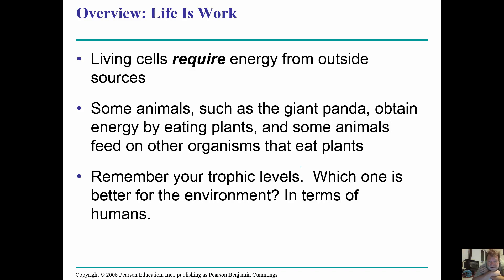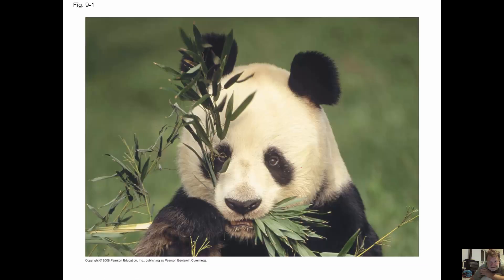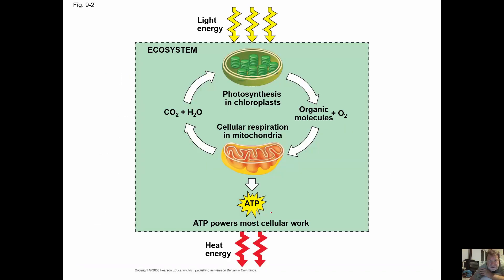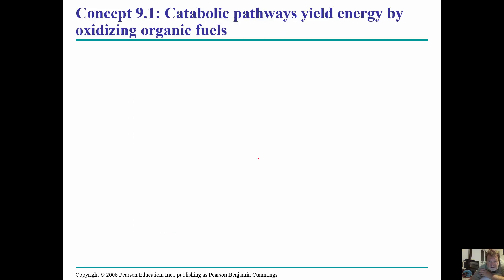Cells require energy from outside sources, and we basically get those from plants. Energy flows into an ecosystem as sunlight and leaves as heat. Cells use chemical energy stored in organic molecules to regenerate ATP, which powers our work. We need to know the relationship between light energy, heat energy, and the cycle of photosynthesis and respiration.